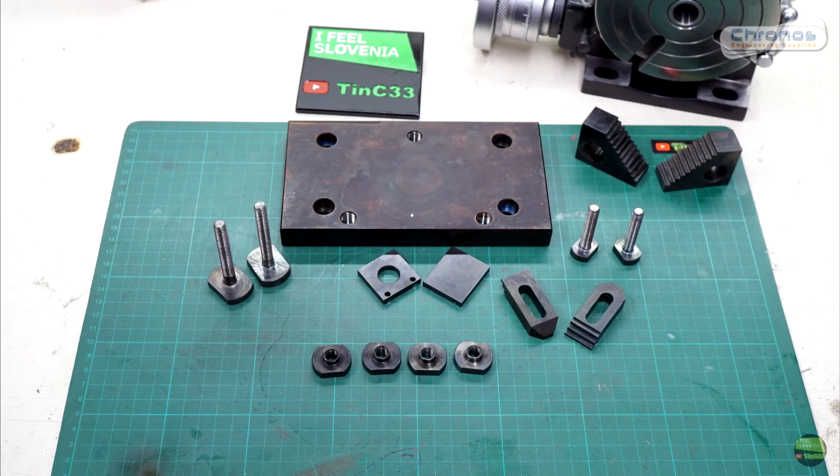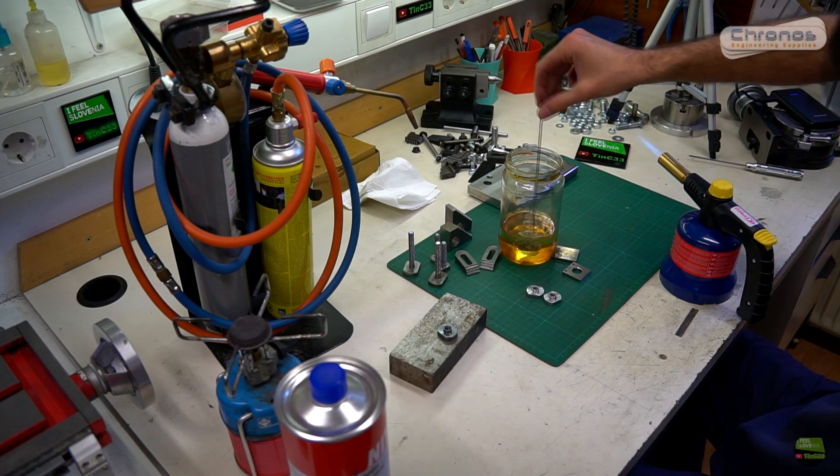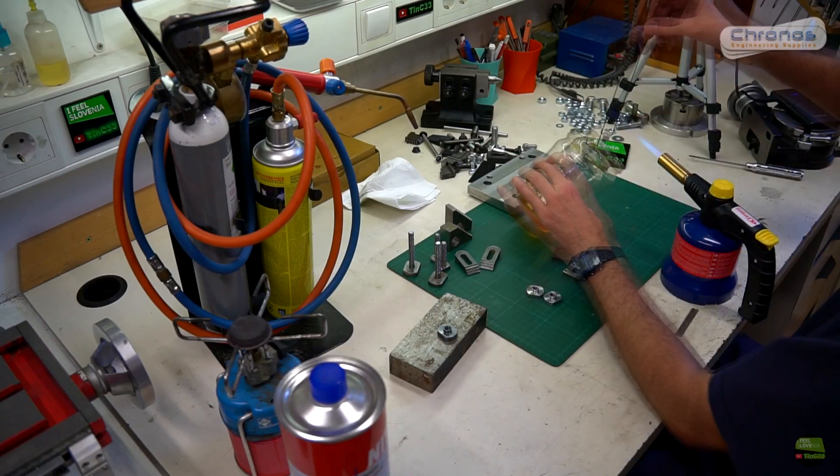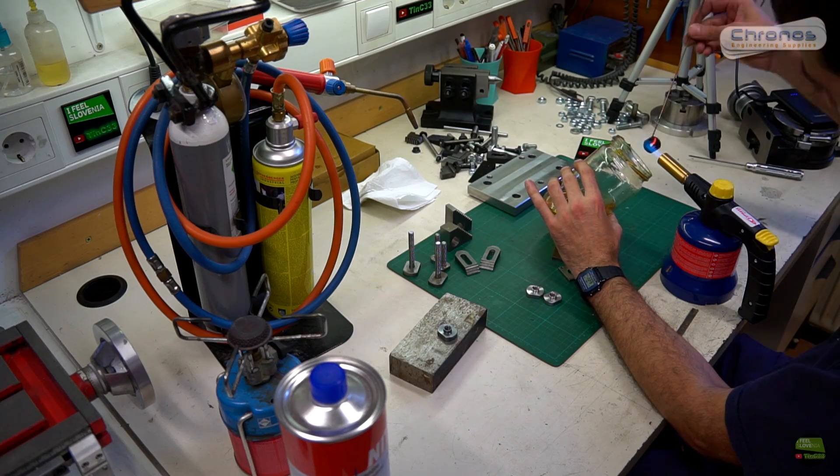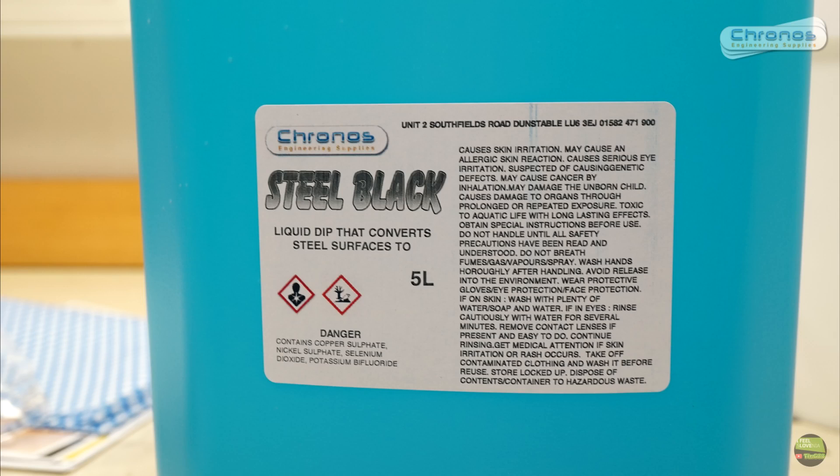There are a few different processes to get the same result. Most common is hot blacking using temperature and oil, and the other is cold blacking with using special solution. So far I only blacked with heating and oil, but now I got special blacking solution from UK store Kronos.